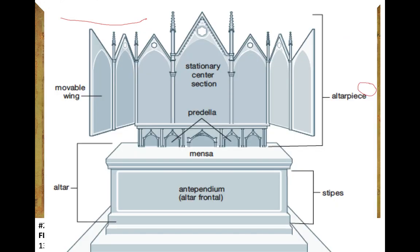If you were curious what these altarpieces looked like, they have movable wings on the outside that open and close. The antependium is an important term to know — it's the altar front. We'll see a lot of artwork that comes from that and the predella. These will be on your vocab list if you need to know them for the next exam.